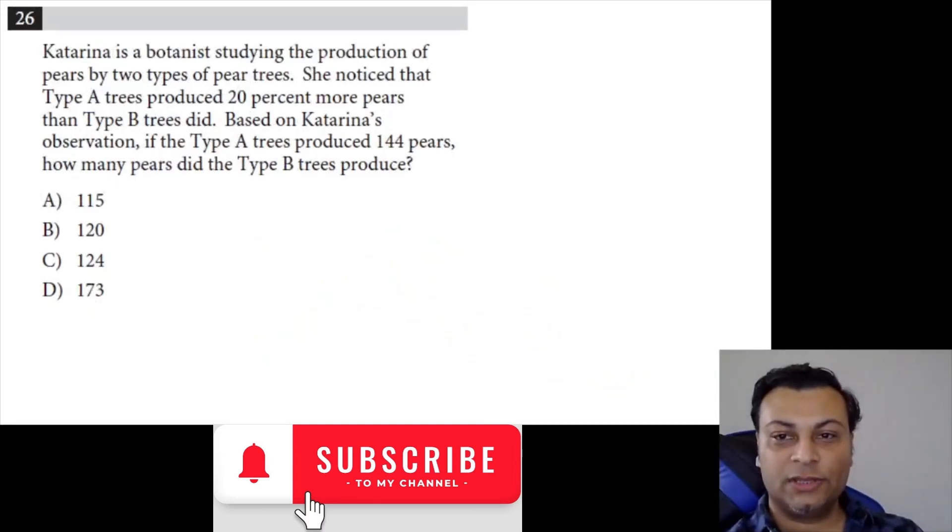Moving on to 26. Katerina is a botanist studying the production of pears by two types of pear trees. She noticed that Type A trees produced 20% more pears than Type B trees did. Based on Katerina's observation, if the Type A trees produced 144 pears, how many pears did the Type B trees produce?